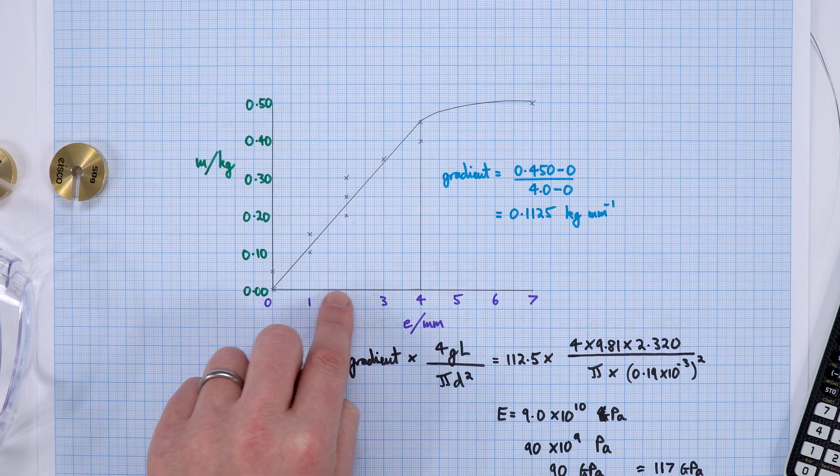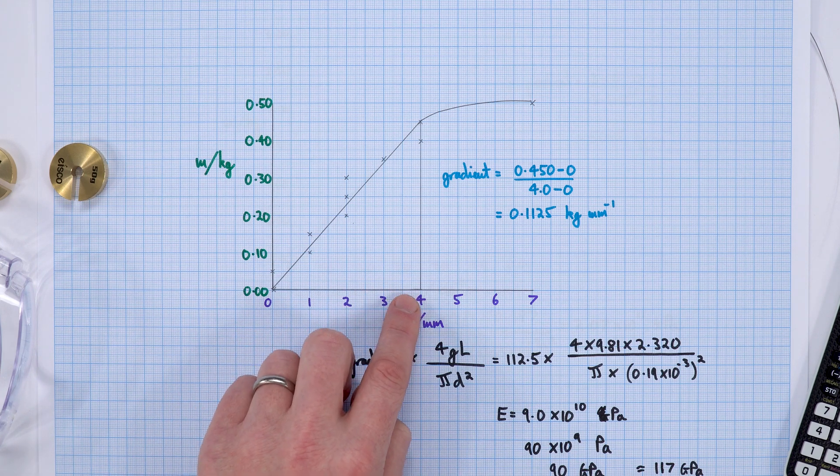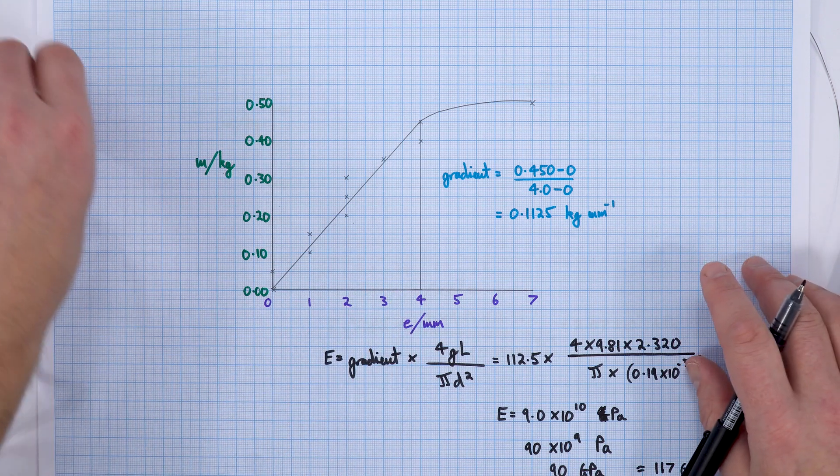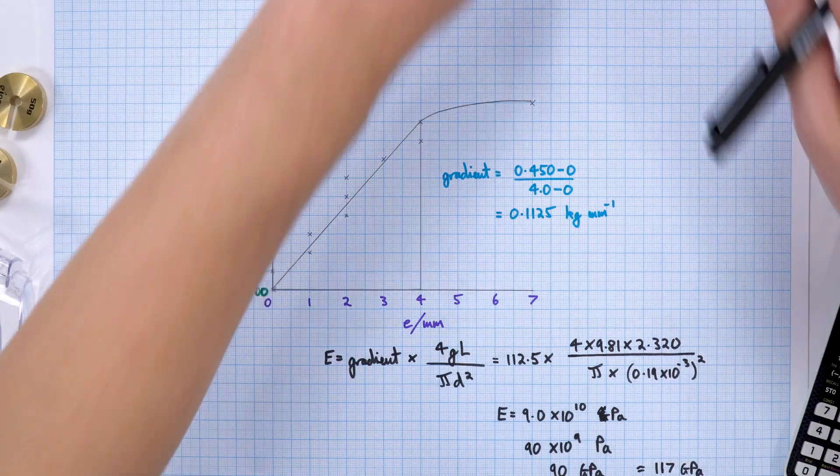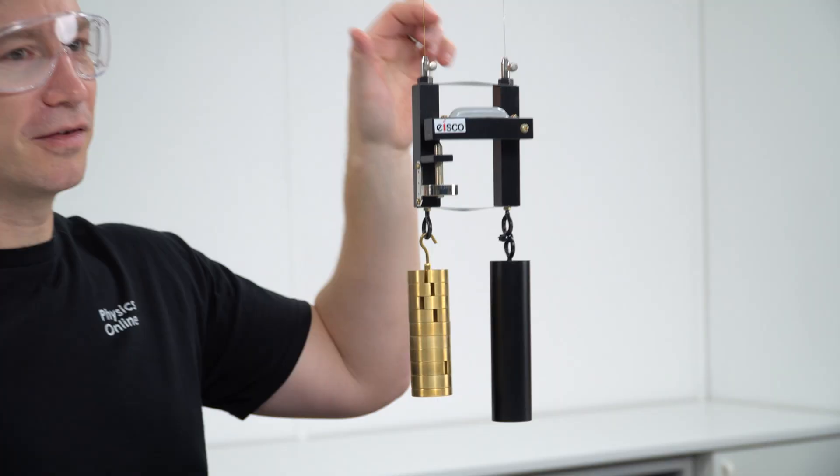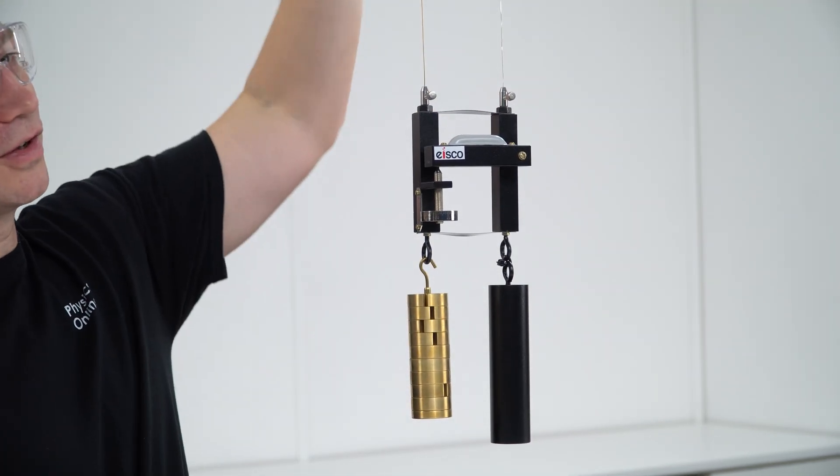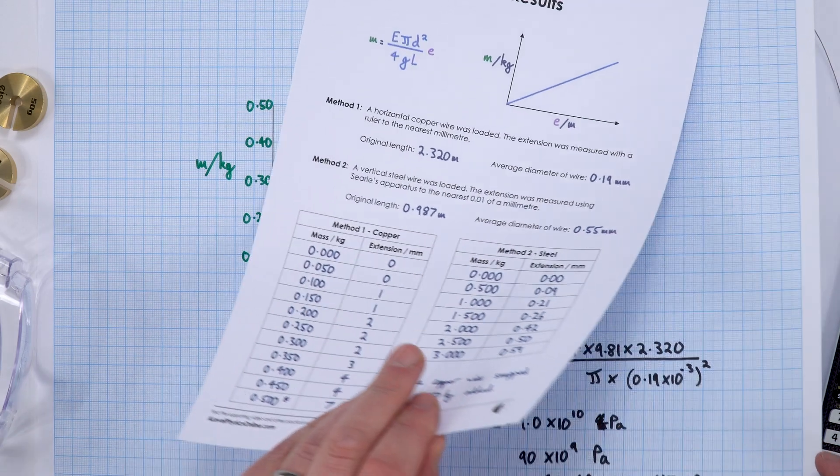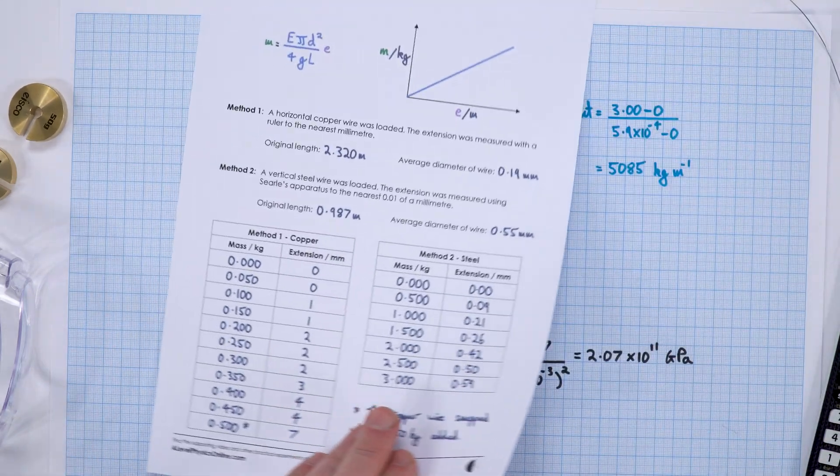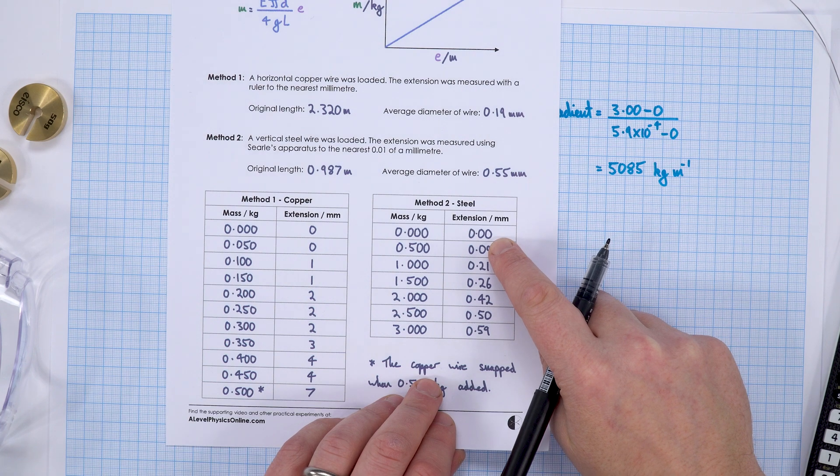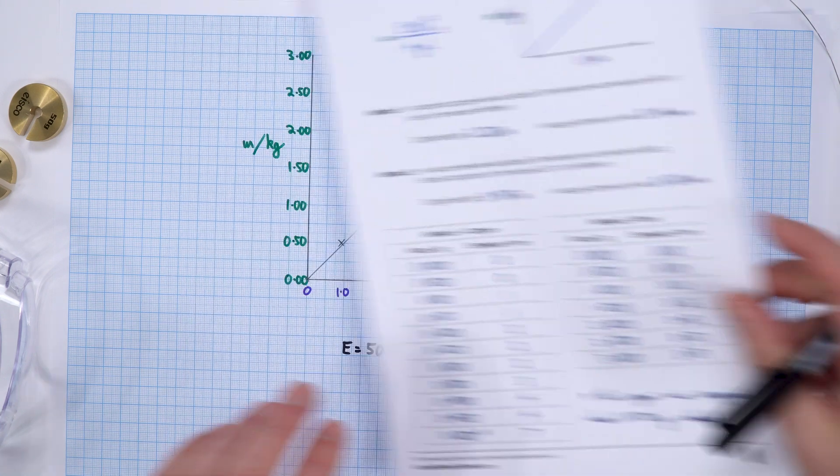When I came to measure the Young modulus of steel, I used different apparatus—I used Searle's apparatus. This allowed me to get much better values for the extension, so we could measure the extension to the nearest hundredth of a millimeter.